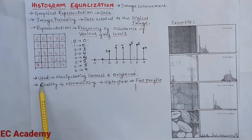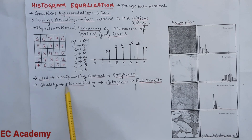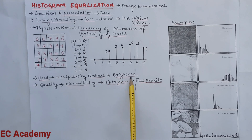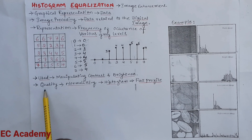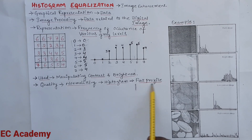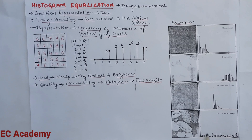Histogram is used for various image processing applications such as manipulating contrast and brightness of a digital image. The histogram can control image quality by normalizing its values to a flat profile. To get a high quality image, the histogram values should be normalized to a flat profile.